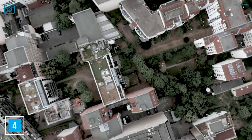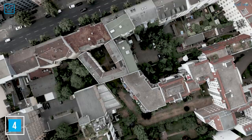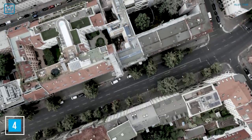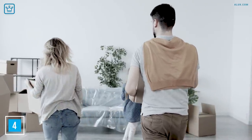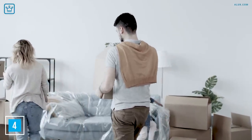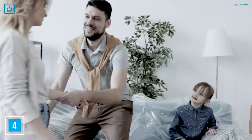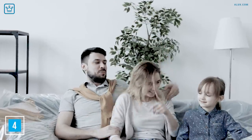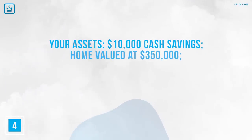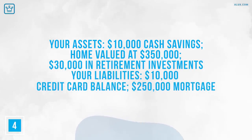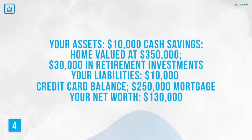Example B: You're a homeowner. Your home is worth $350,000 on the current market. You have $250,000 left to pay on your mortgage and a credit card balance of $10,000. Your mortgage has an APR of 3.25% and your credit card charges 19.99%. You have $10,000 in cash savings and $30,000 in a 401k. Your income is enough to pay all your bills with $500 in discretionary cash left over each month. Your assets: $10,000 cash savings, a home valued at $350,000, and $30,000 in retirement investments. Your liabilities: $10,000 credit card balance and $250,000 left on your mortgage. Your net worth: $130,000.